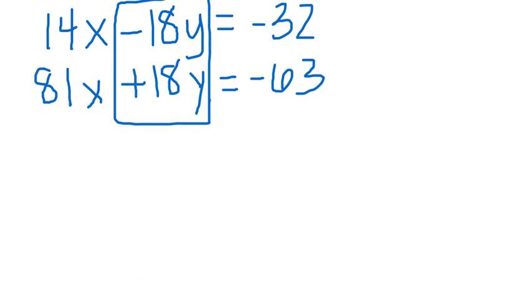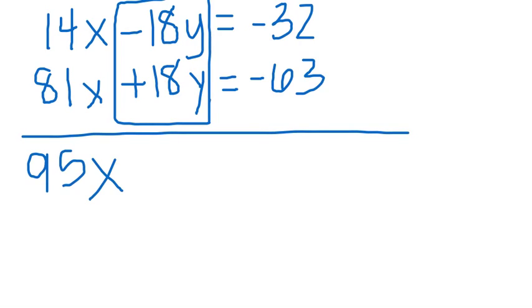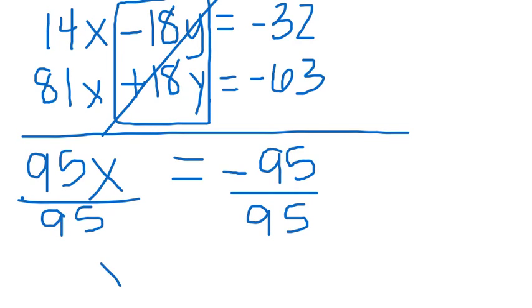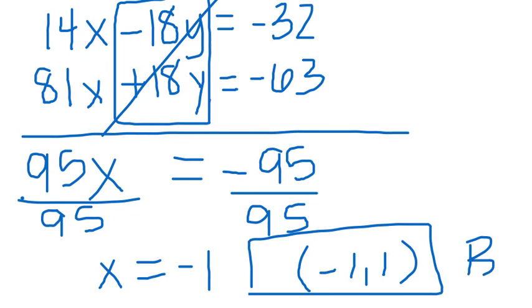So adding these equations together, 14 plus 81 gives us 95x. Negative 18y plus 18y eliminates. And then if you add negative 32 to negative 63, you end up with negative 95. Divide both sides by 95, and x equals negative 1. Since x equals negative 1, you can already identify that the answer is B, because that's the only one that has an x value of negative 1. But of course, you could go back and check by plugging in x to get that y would equal positive 1.